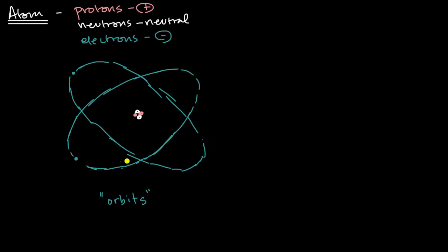Now it turns out that this is not exactly the case. Electrons are not in these well-defined circular or elliptical orbits. In fact, at any given point in time, it's not necessarily exactly right there — it could be there, but there's some probability it's here, some probability it's there, some probability it's over there. And so to describe where electrons are likely to be found, physicists and chemists introduced the idea of an orbital.